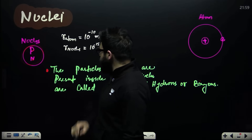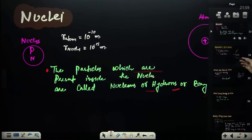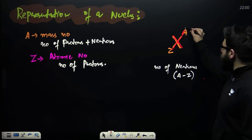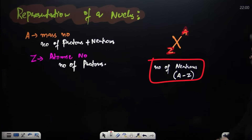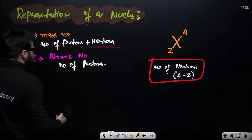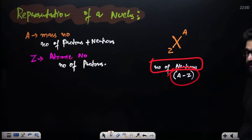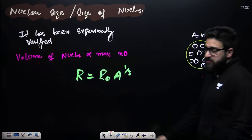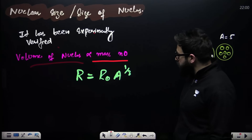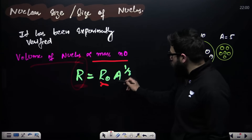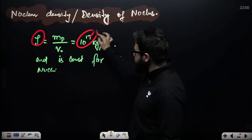Moving to the nucleus: inside the nucleus are protons and neutrons, called hadrons, baryons, or nucleons. For a nucleus X, A is the mass number (protons + neutrons) and Z is the atomic number (number of protons). Number of neutrons = A − Z. Nuclear size: volume is proportional to mass number, so radius = R₀ × A^(1/3). Density of nucleus is constant at 10¹⁷ kg/m³ for all nuclei.